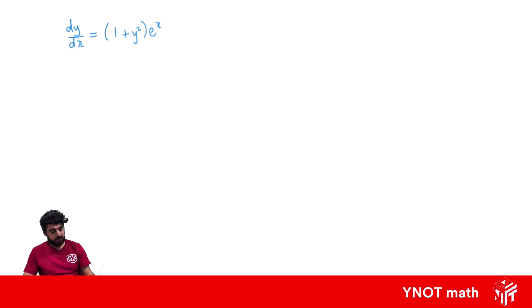Now this is in the form where we have a function of y multiplied by a function of x, which means we can easily bring our y's with our dy's and our x's with our dx's. So we're going to do that first by multiplying both sides by 1 over 1 plus y squared. So this will cancel with this, and then we'll take the dx to the other side. So we have 1 over 1 plus y squared dy, and multiplying the other side by dx gives us e to the x dx. And now we can integrate both sides.